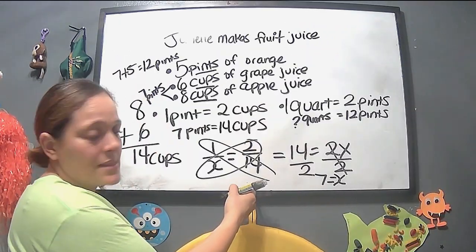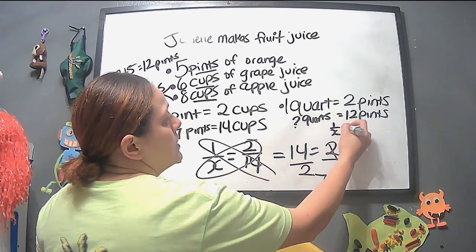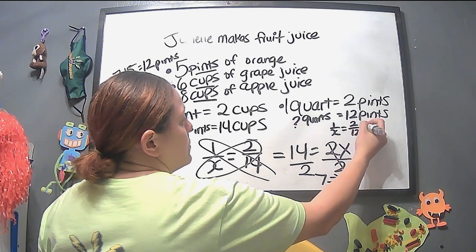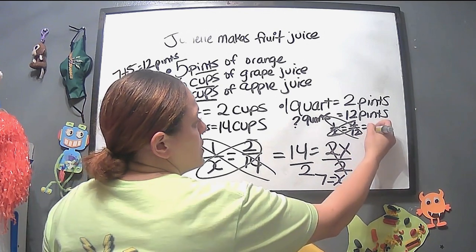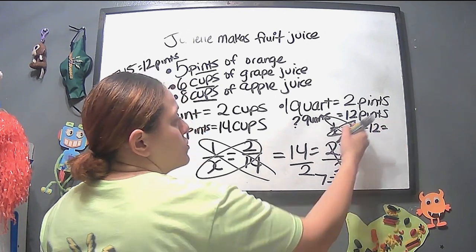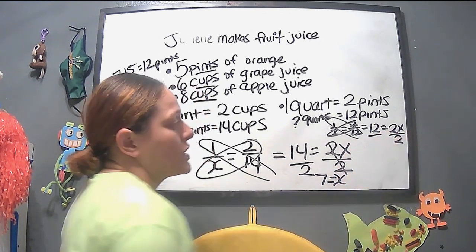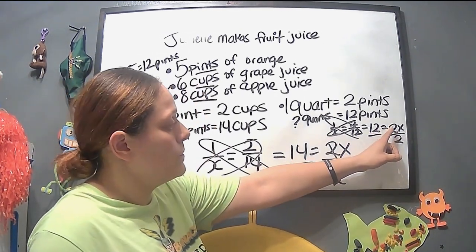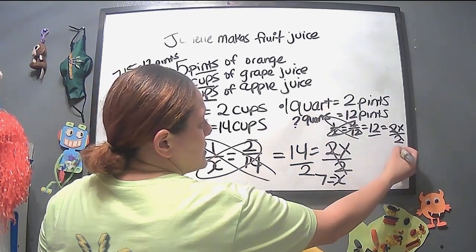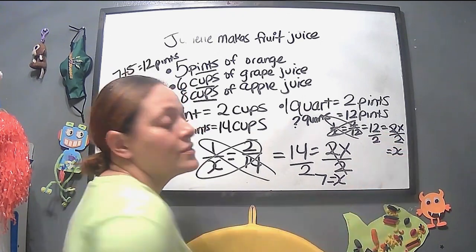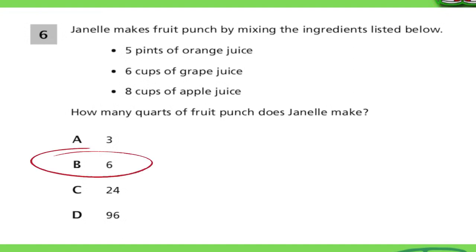Well, we're going to use the same concept as this. We're going to do 1 over X equals 2 over 12, which gives us, well, we do that little multiplication thing there. We do 1 times 12 is 12, equals 2 times X, which is the same as 2X. We divide both, because we're going to do the opposite or the inverse operation. That cancels it out. And X equals, well, 12 divided by 2 is 6. So the answer would be 6 quarts.